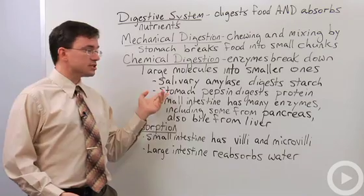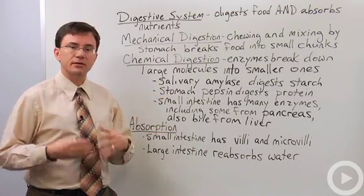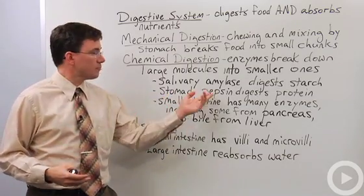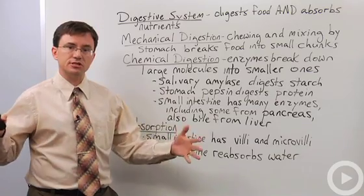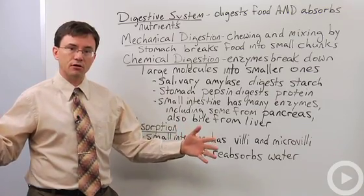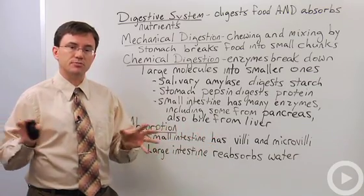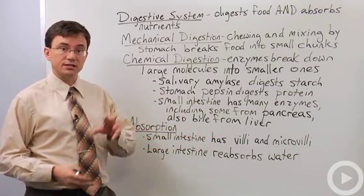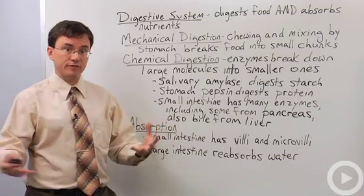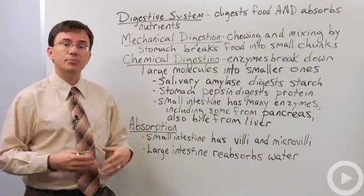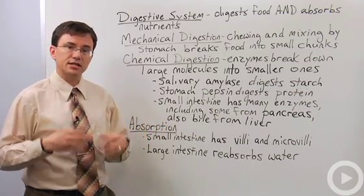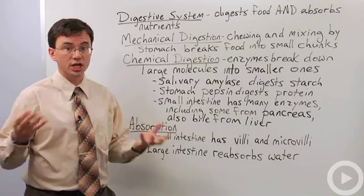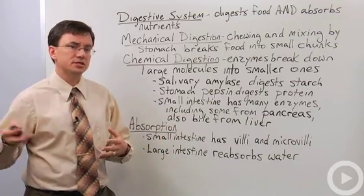In your stomach, the enzyme that everybody focuses on is pepsin. What pepsin does is start to break down long proteins into smaller chunks. Pepsin is interesting in that it's a very effective enzyme, but it's actually created by the stomach cells in an inactive form called pepsinogen.